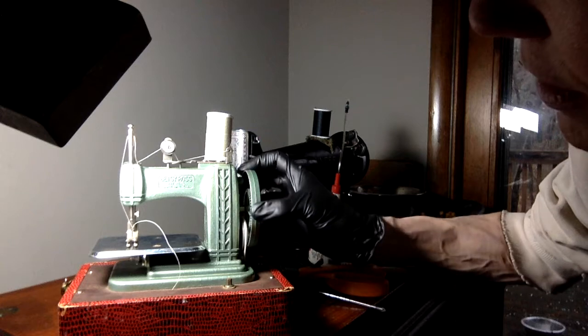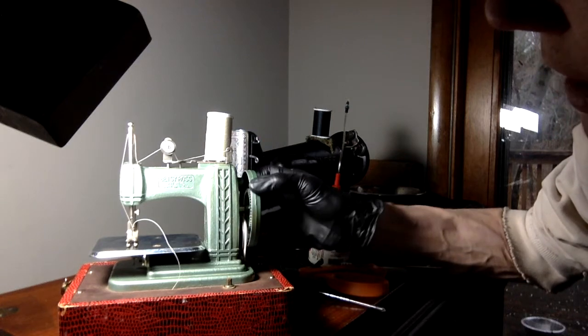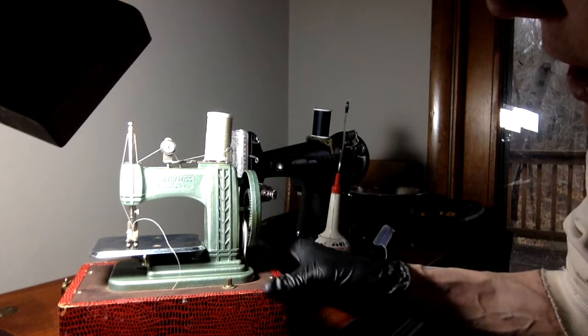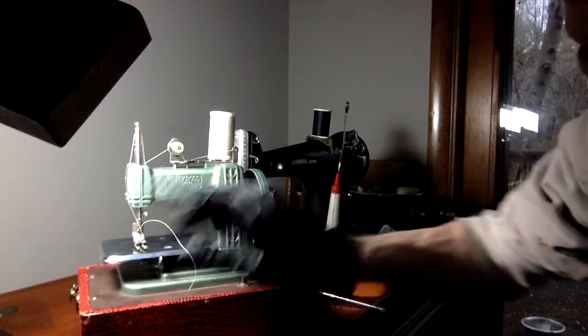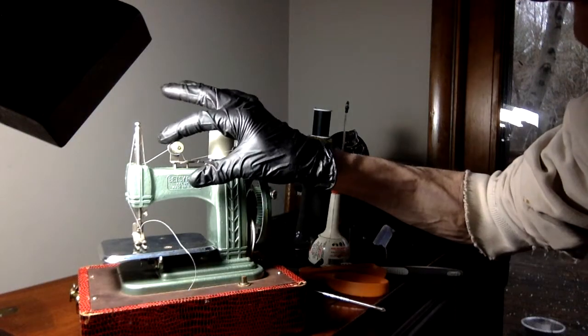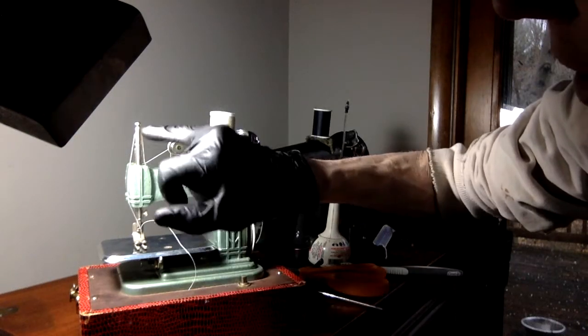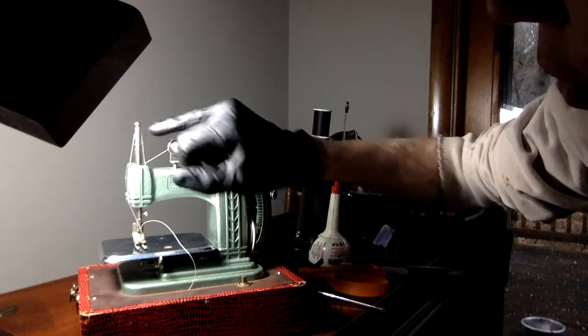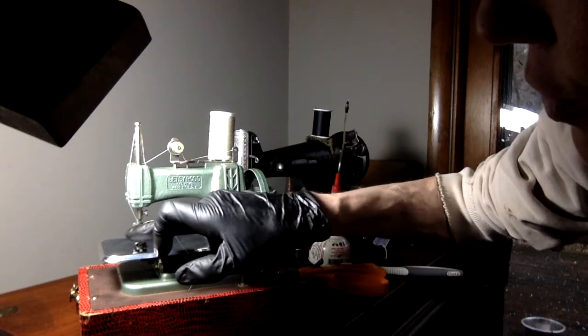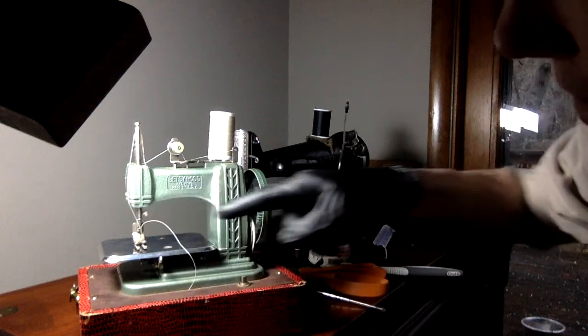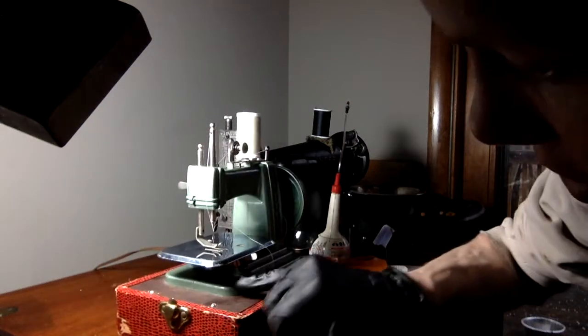When you turn the wheel it also lifts up and lets the tension off. And then here's the tension, this is for tension, and then it goes through this loop and then here through this hole. You have to loop it through the needle in this direction or it won't catch underneath.